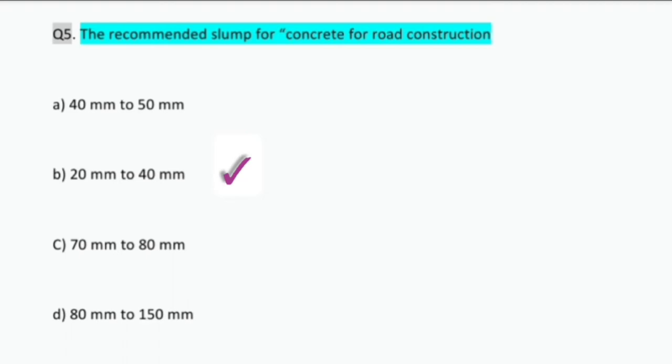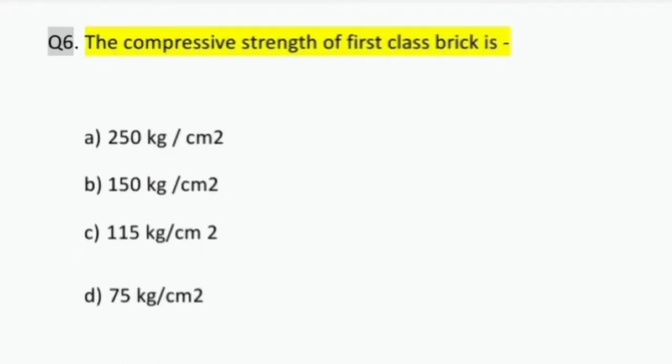Question number six: the compressive strength of first class brick. This is one of the questions that is generally asked in competitive exams and interviews. So answer is C: 115 kg per cm².